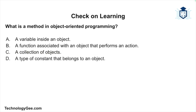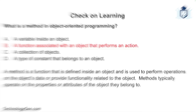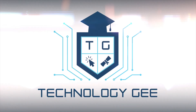Question 3: What is a method in object-oriented programming? Is it a variable inside an object? A function associated with an object that performs an action? A collection of objects? Or a type of constant that belongs to an object? The correct answer is: a function associated with an object that performs an action. A method is defined inside an object and is used to perform operations on the object's data, typically operating on the properties or attributes of the object it belongs to.